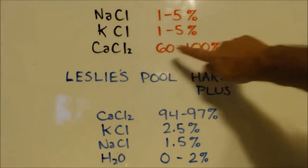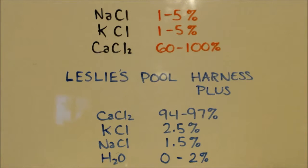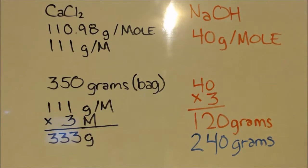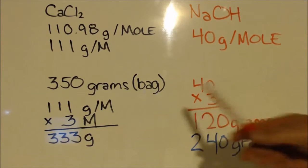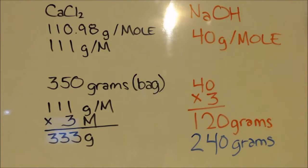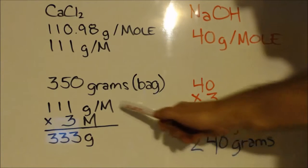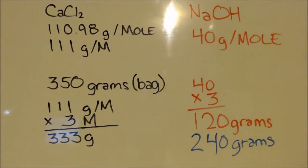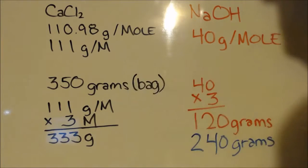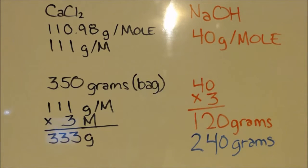Since we don't know the actual percentage of our calcium chloride from the DampRid, we'll have to figure something out. As we discussed, I need twice as much sodium hydroxide according to the equation. I got 350 grams out of the bag of calcium chloride, the DampRid. Now a mole of calcium chloride is 111 grams. So if I take 3 times 111, that's 333 grams. That's almost 350.